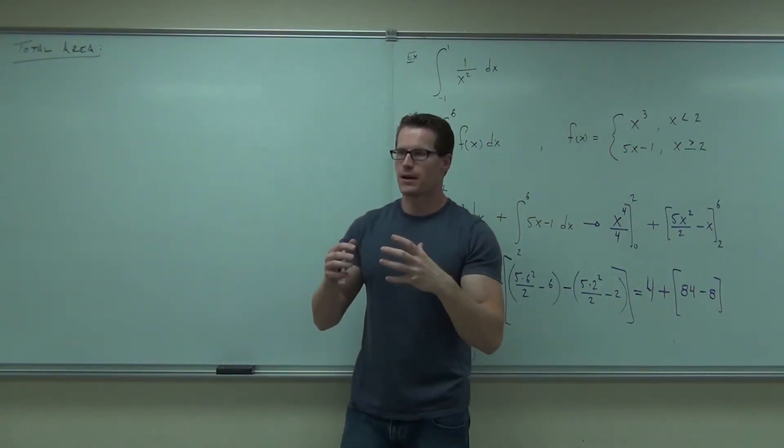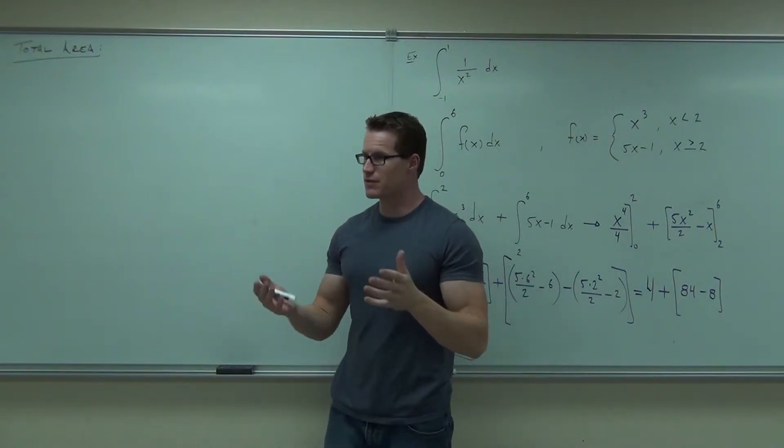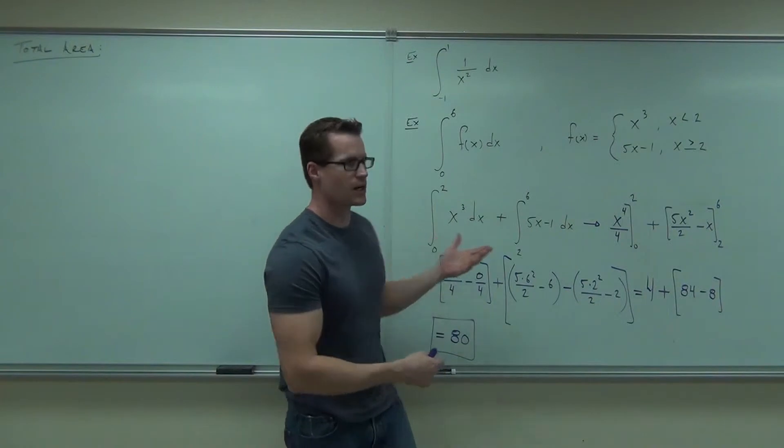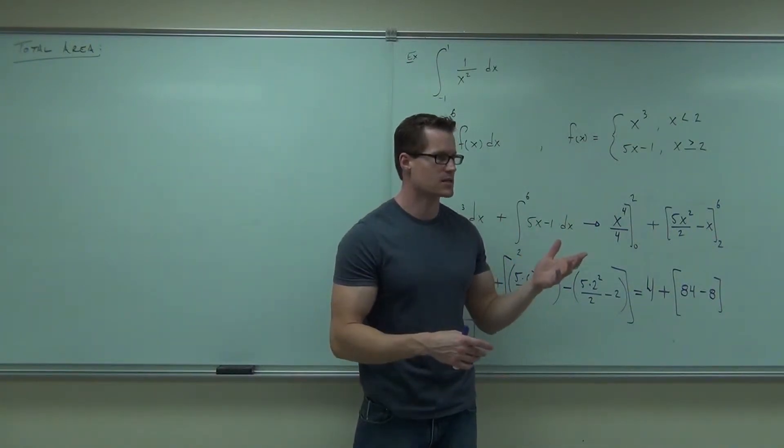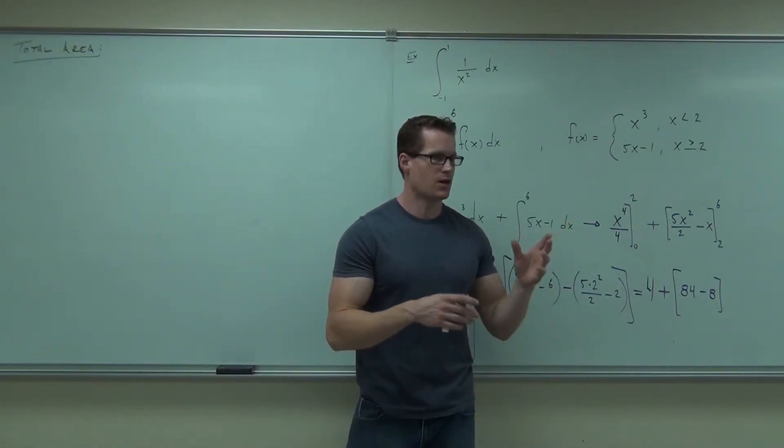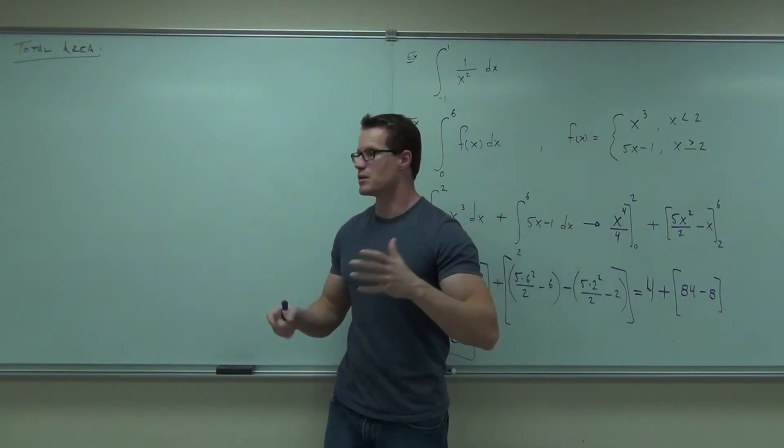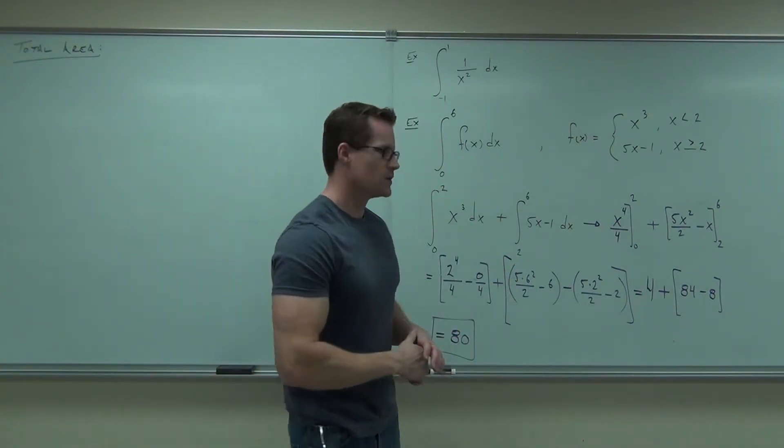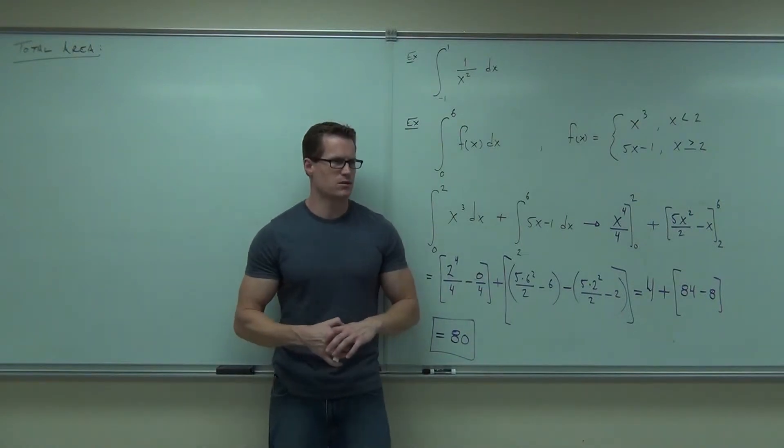Or actually, the area, the net signed area. If this thing went below the x-axis, I can't see that it does, but if it did go below the x-axis, then we would actually have the area that takes the difference between the area above and the area below. And that would be net signed area. Do you feel okay with this example? Do you have any other questions?